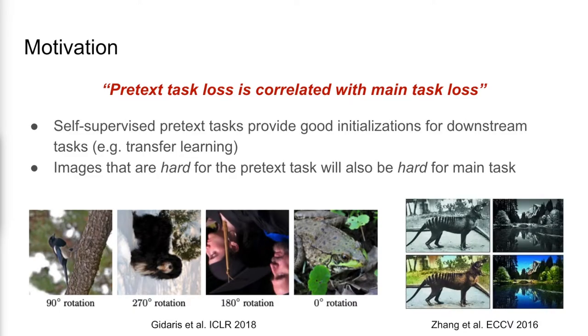We already know from methods such as transfer learning that self-supervised pretext tasks, such as rotation prediction and colorization, provide good initializations for downstream tasks. We therefore deduce that images that are hard for the pretext task will also be hard for the main task.